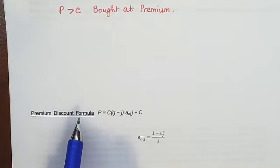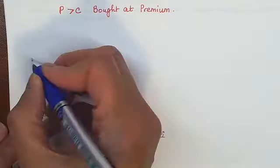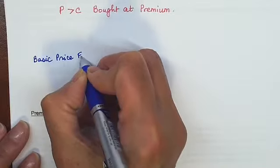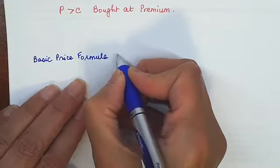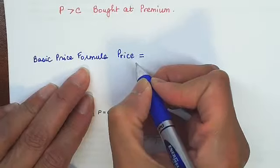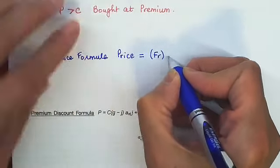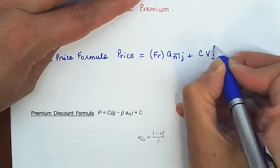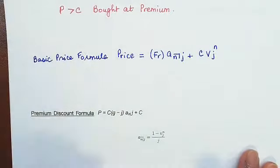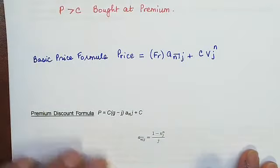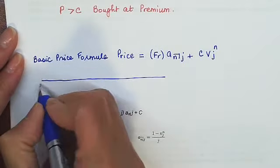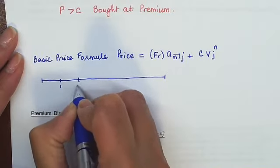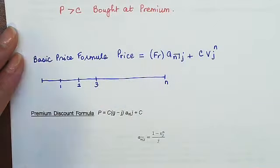And in order to do that, I am going to begin with our basic price formula given by price equals FR times A angle NJ plus C times VJ to the N. Again, where does this come from? This comes from the fact that you have a bond which pays coupons at periods 1, 2, 3, all the way to N.